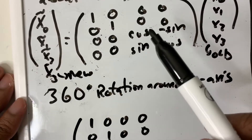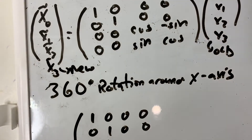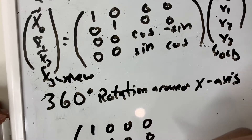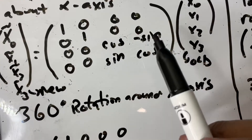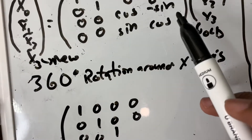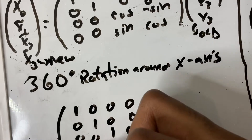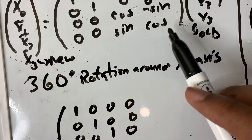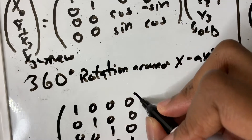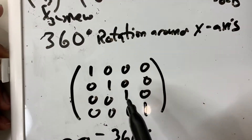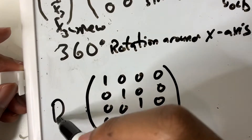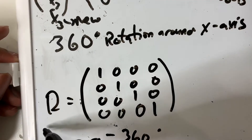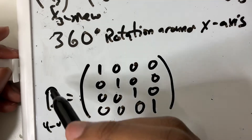Cosine of 2π — well, cosine of 0 is 1, cosine of π is minus 1, so cosine of 2π is going to be 1. And then minus sine of 2π is going to be 0, and cosine of 2π again is 1. So you have all 1s along this diagonal — this is the rotation matrix for the 4-vector about the x-axis for a 360-degree rotation, and it's just the identity matrix.